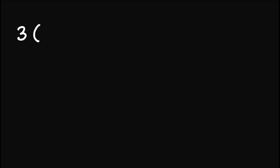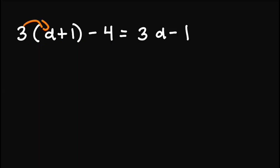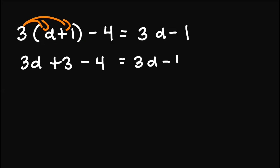Let's have this one: 3 times d plus 1 minus 4 equals 3 times d minus 1. So again, before we can move terms from either side of the equation, we first simplify the left side. So distributing 3, we obtain 3d plus 3 minus 4 equals 3d minus 1.